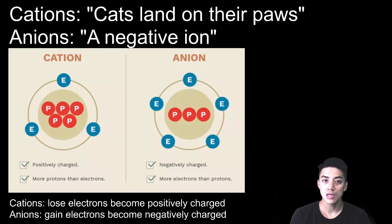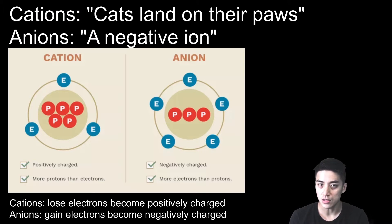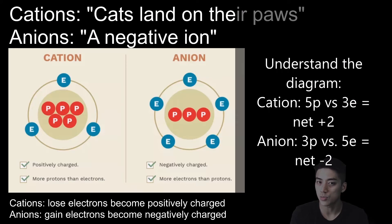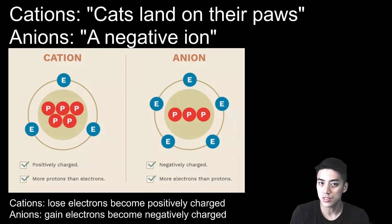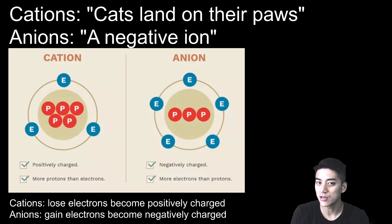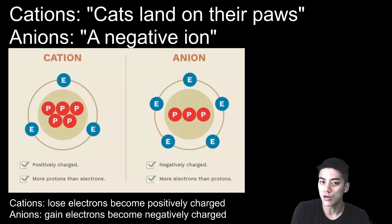Before discussing the next three trends, you need to know a little vocabulary: the difference between cation and anion. A cation loses electrons and becomes positively charged. When you lose electrons — which are negatively charged particles — you become positive overall. An anion gains electrons and becomes negatively charged. A simple way to remember: cats land on their paws — as in positive — so cations are positive. And an anion is a negative ion — it starts with the letter A.